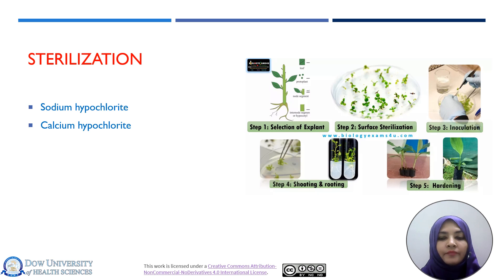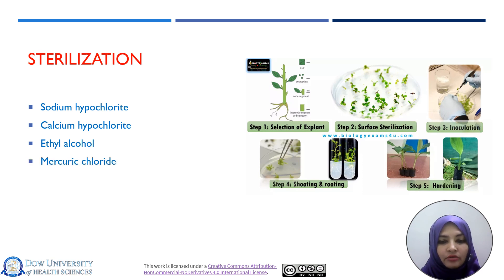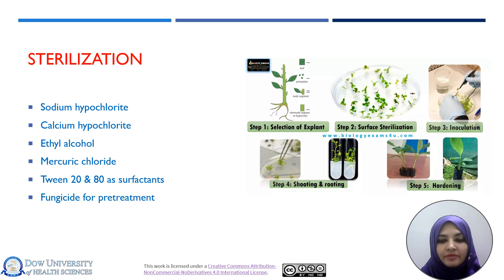Sterilization also depends on the size of the explant. Some explants are very fragile, soft tissues, and some are very hard types of cells. Different types of explants require different sterilization approaches. Sodium hypochlorite, calcium hypochlorite, ethyl alcohol, mercuric chloride, Tween-20, and other surfactants can be used for proper sterilization and production of aseptic cultures.